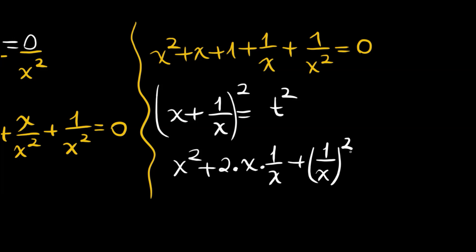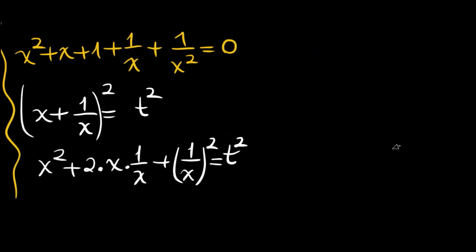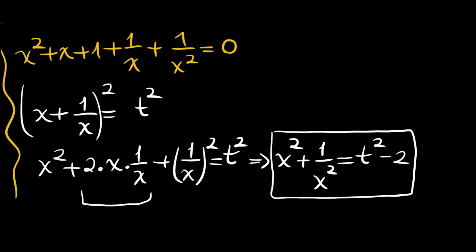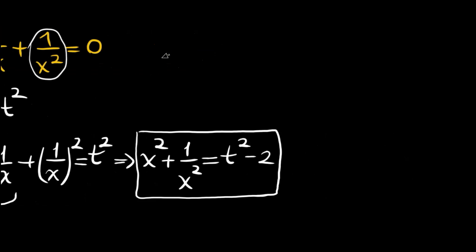Squaring both sides gives x squared plus 2 times x times 1 over x plus 1 over x squared equals t squared. The middle term becomes 2, so we get x squared plus 1 over x squared equals t squared minus 2.